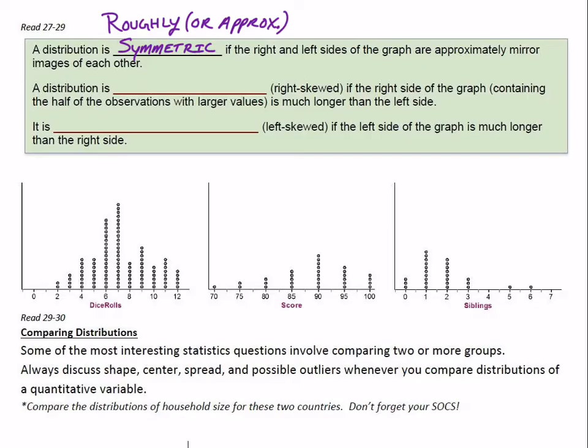And the next one, we say a distribution is skewed to the right, or you could say right skewed, if the right side of the graph containing the half of the observations with larger values. If you think about the dot plot above, the right side on the number line, that's where the larger values were. If the right side is much longer than the left side, that's what makes it right skewed. And then you can probably guess what this one's going to be. Left skewed or skewed to the left if the left side of the graph is much longer than the right side.